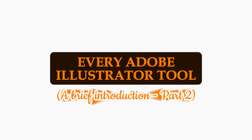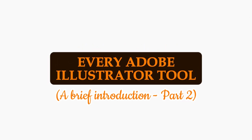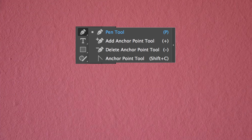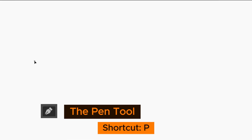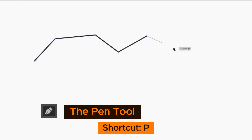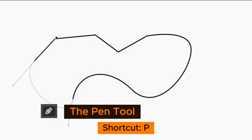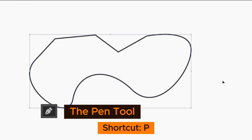Every Adobe Illustrator Tool: A Brief Introduction Part 2. The Pen Tool — shortcut is the letter P. Used to draw paths; each click adds a new anchor point to the path, and dragging the mouse before releasing the click will add handles for curvature. Clicking back on the first anchor will close the path.